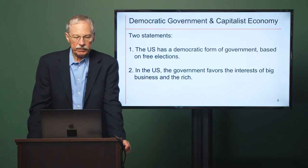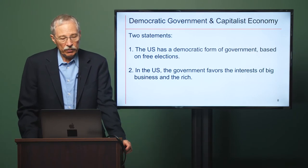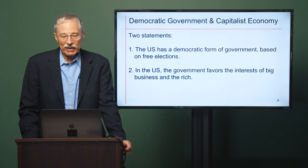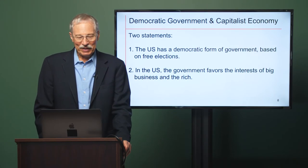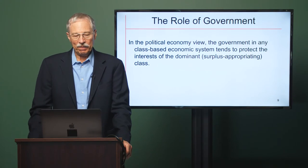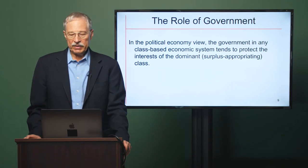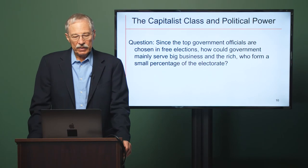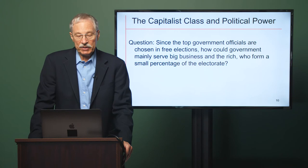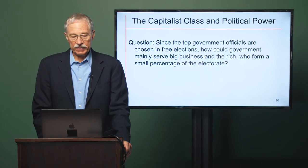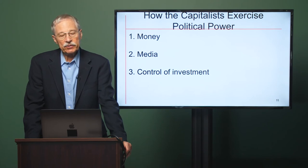Here are two statements to consider. One: the U.S. has a democratic form of government based on free elections — almost everyone would agree with this. Two: in the U.S., the government favors the interests of big business and the rich. Many people believe the second statement is true, and it poses a paradox. How can they both be true? If the government is democratic, how could it favor just a minority of the population? In the political economy view, the government in any class-based economic system tends to protect the interests of the dominant class — that is, the class that appropriates the surplus. Since top government officials are chosen in free elections, how could government mainly serve big business and the rich, since they form a small percentage of the electorate?